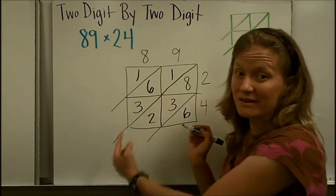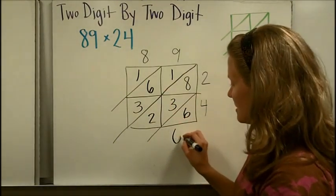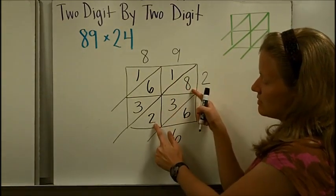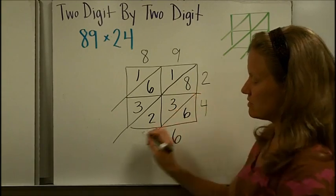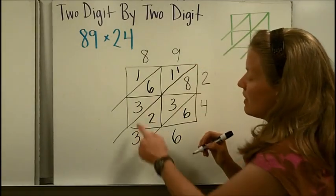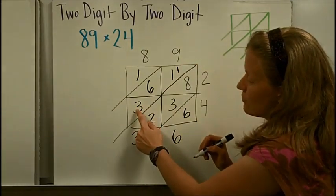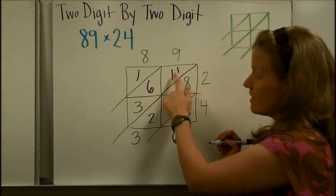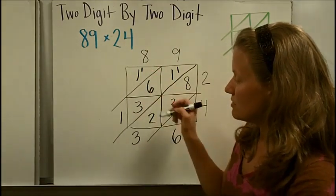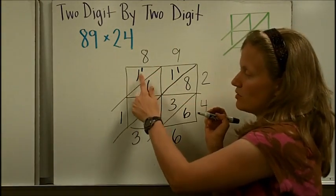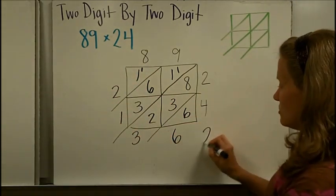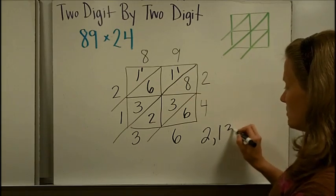Then I add diagonally just as before. The first column is just 6. Next I add 2, 3, and 8: 8 and 2 make 10, plus 3 is 13 — put down the 3 and carry the 1. Then 3 plus 6 plus 1 equals 10, plus one more is 11 — put down the 1 and carry a 1. Finally, 1 plus 1 makes 2. Reading left to right: 2, 1, 3, 6 — so the product is 2,136.